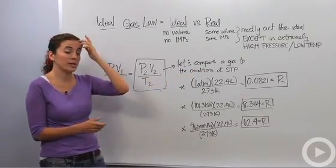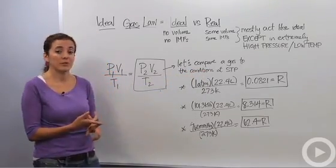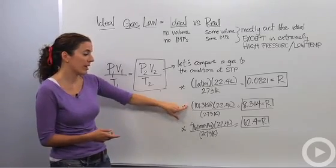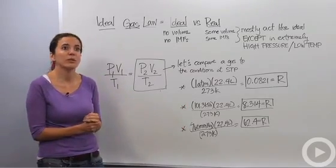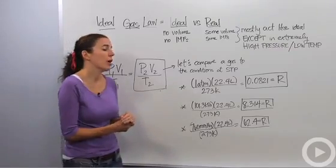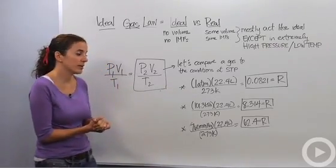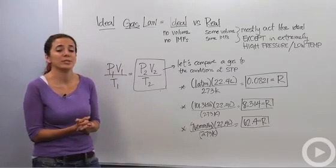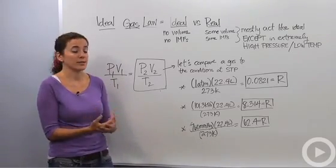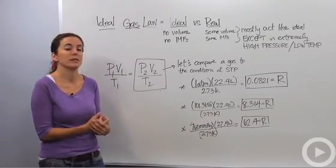And don't forget those conditions are 1 atmosphere or 101.3 kilopascals or 760 millimeters of mercury for your pressure. Our molar volume will always be 22.4 liters. And our temperature will always be 273 Kelvin or 0 degrees Celsius, but we like things in Kelvin because it's always positive that way.